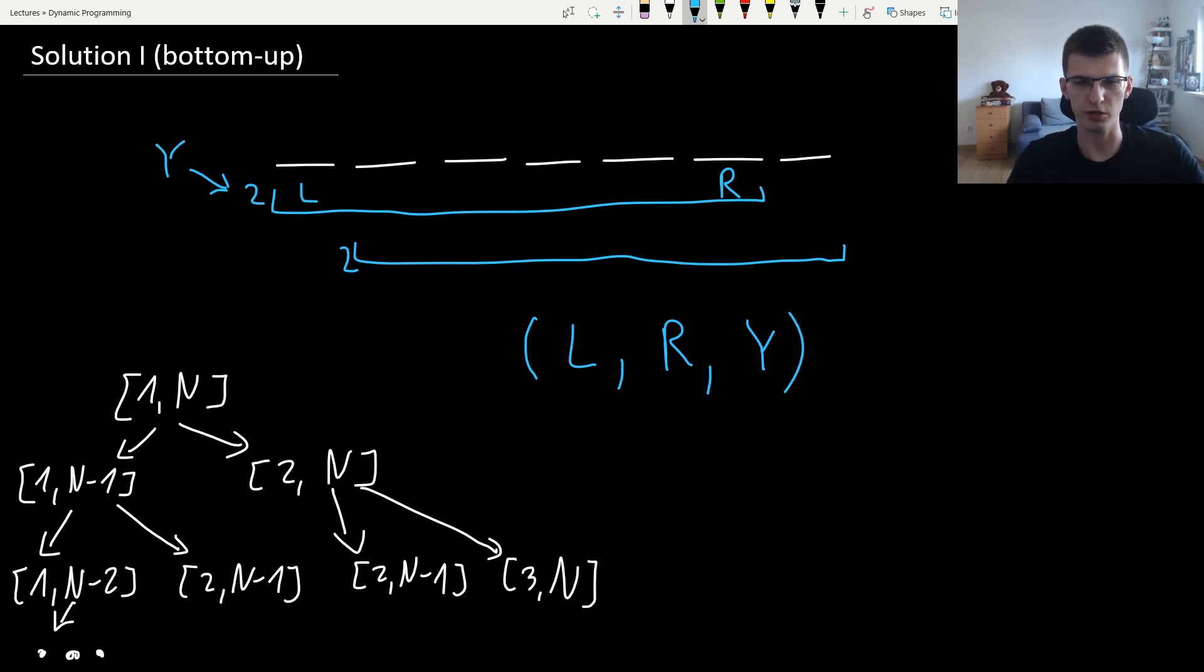Maybe dynamic programming with those three dimensions would work. It's important, if possible, to get rid of some dimensions of DP to improve the complexity and here that unnecessary dimension is actually Y. Because if you know L and R, you can figure out what Y is. If you are left with this interval, you know that you sold 2 wines on the left and 3 wines on the right. Since year 1, 5 more years passed, so the current year must be 6. This means the state of our DP will be just L, R, the remaining interval.